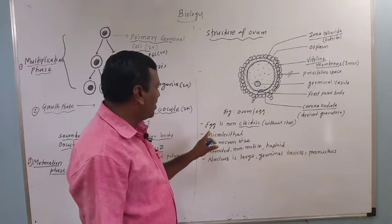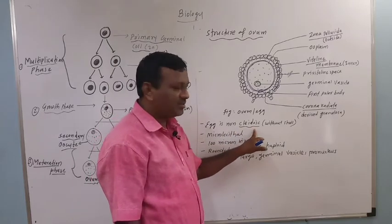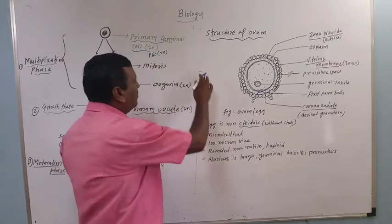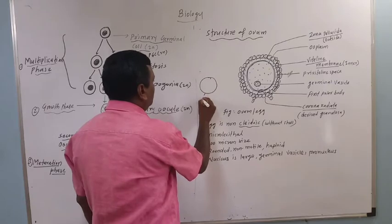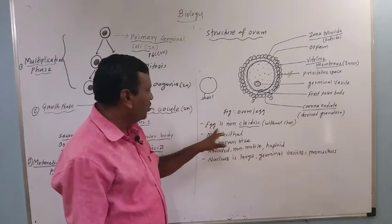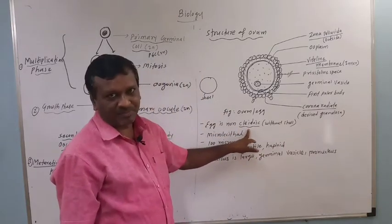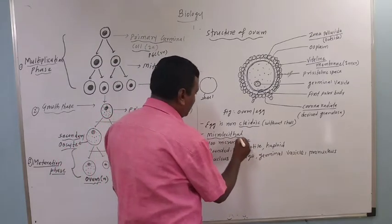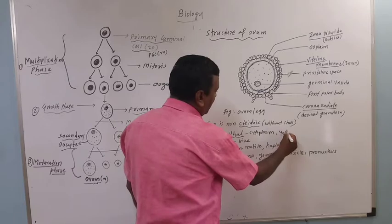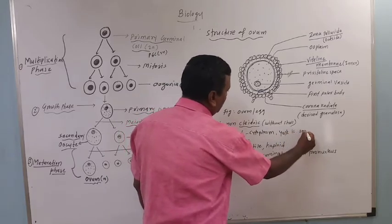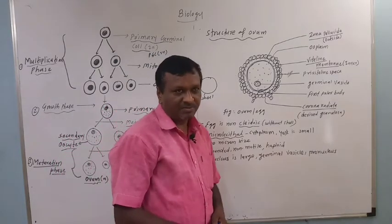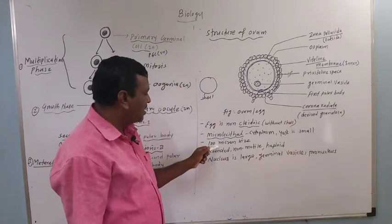The ovum or egg is non-cleidoic, meaning it is without a shell. The human egg is non-cleidoic type. It is also microlecithal type, meaning there is a large amount of cytoplasm but only a small amount of egg yolk. The size of the human egg is 100 microns.